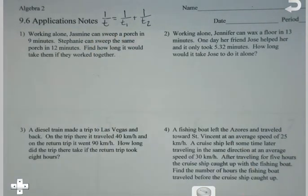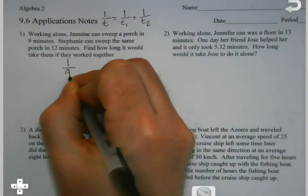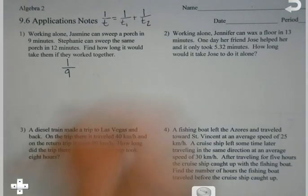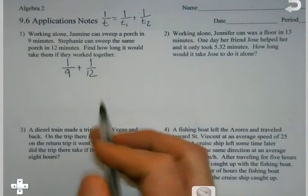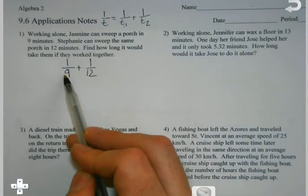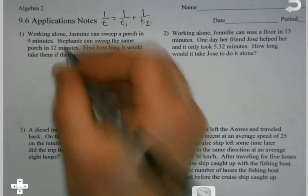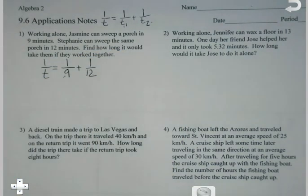So if I get a problem like number one, it says, working alone, Jasmine can sweep a porch in nine minutes. So one over her time. Stephanie can sweep the same porch in 12 minutes. That's my t2. So right now I've got this part and I have this part. How long would it take if they worked together? I don't know what the total t is.